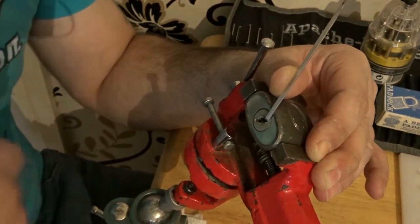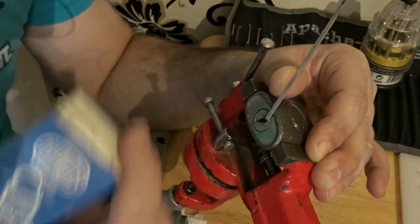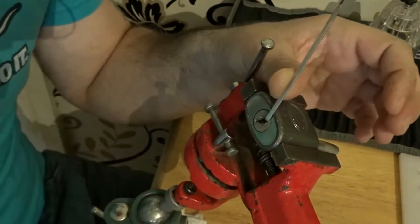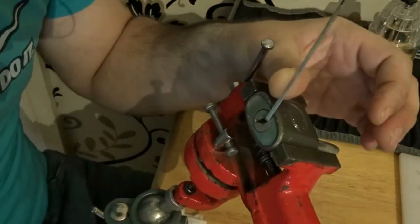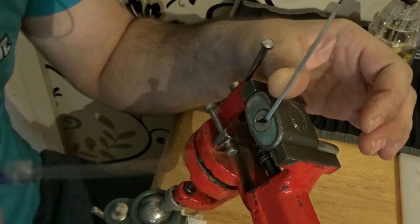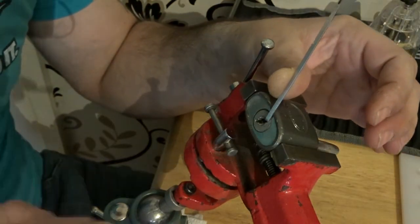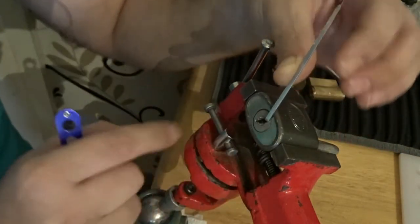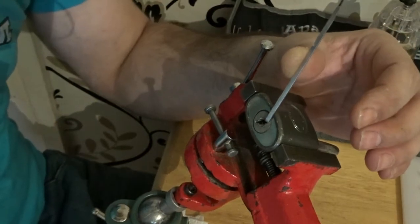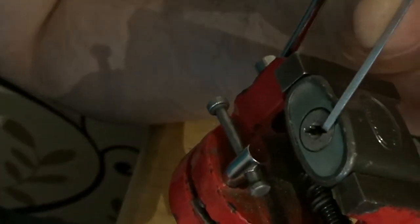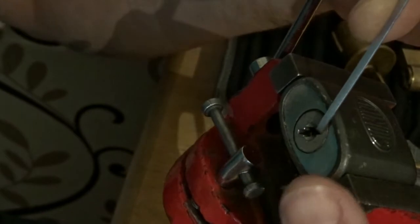Hello, today we're going to be picking an Illinois J-War padlock. As you can see, I've already picked it, and the tool I used to pick it with was this. Right there, as you can see, it's picked open.